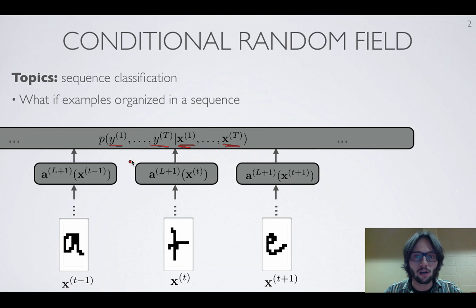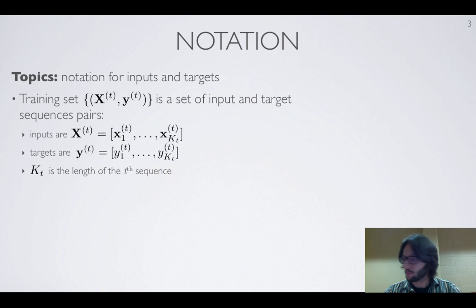We have a distribution over the whole sequence and can reason based on that distribution. For instance, find what is the most likely sequence of labels as opposed to making an element-wise classification. This is what conditional random fields allow us to do.